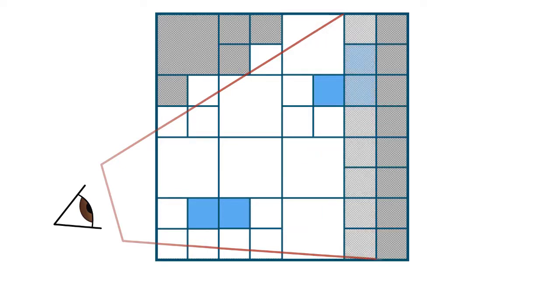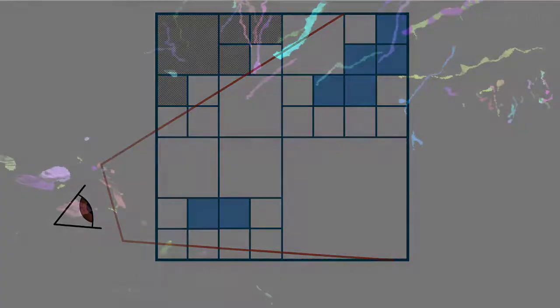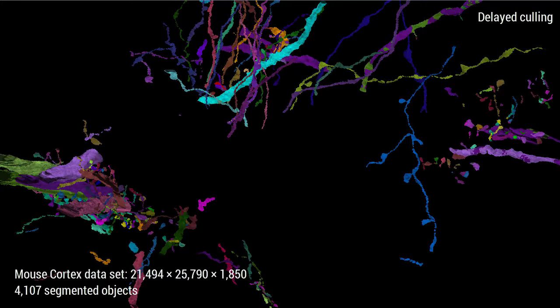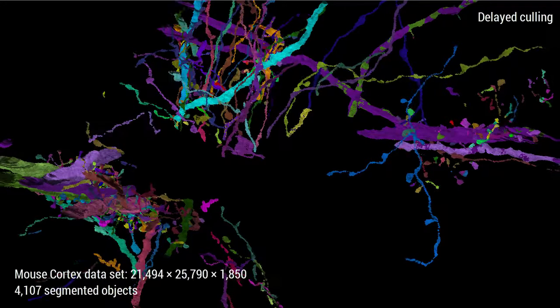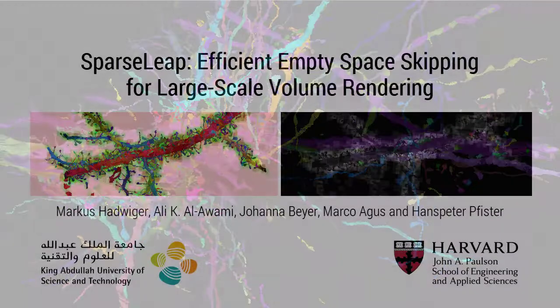This ensures that occluded blocks or blocks outside the view frustum will never be culled. In total, this allows for an output-sensitive system design where only visible volume blocks will be culled, and then only those blocks that have been determined to be non-empty will be paged in for actual rendering.